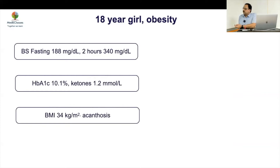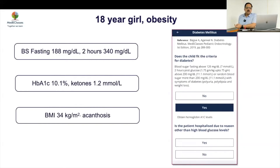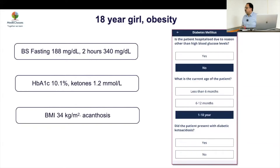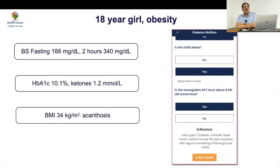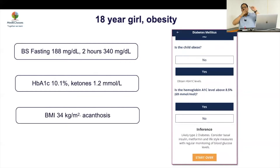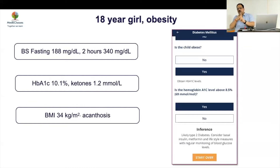Case 4: an 18-year-old girl with obesity, similar picture, but HbA1c is 10 with mild ketosis. Ketones are present, so it is better to start basal insulin rather than a full basal-bolus regimen for Type 1. Essentially you look at three things: age (1–18 years), DKA (yes/no), and obesity (yes/no) — and then perform two tests: GAD antibody and genetic study. That's the algorithm.